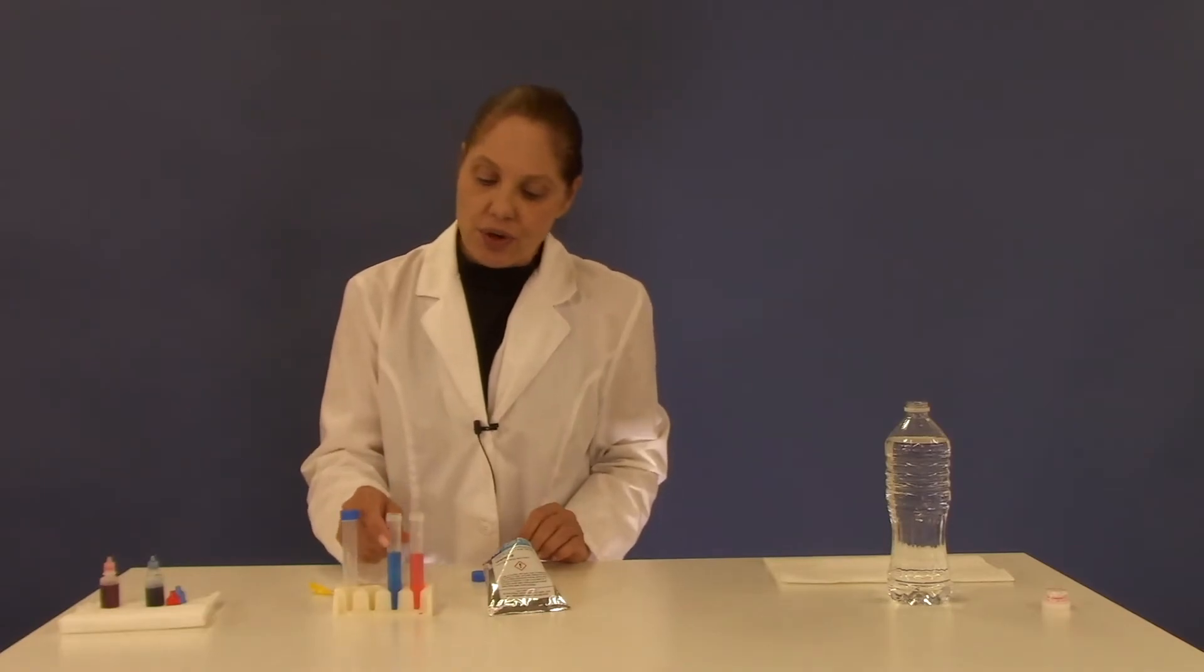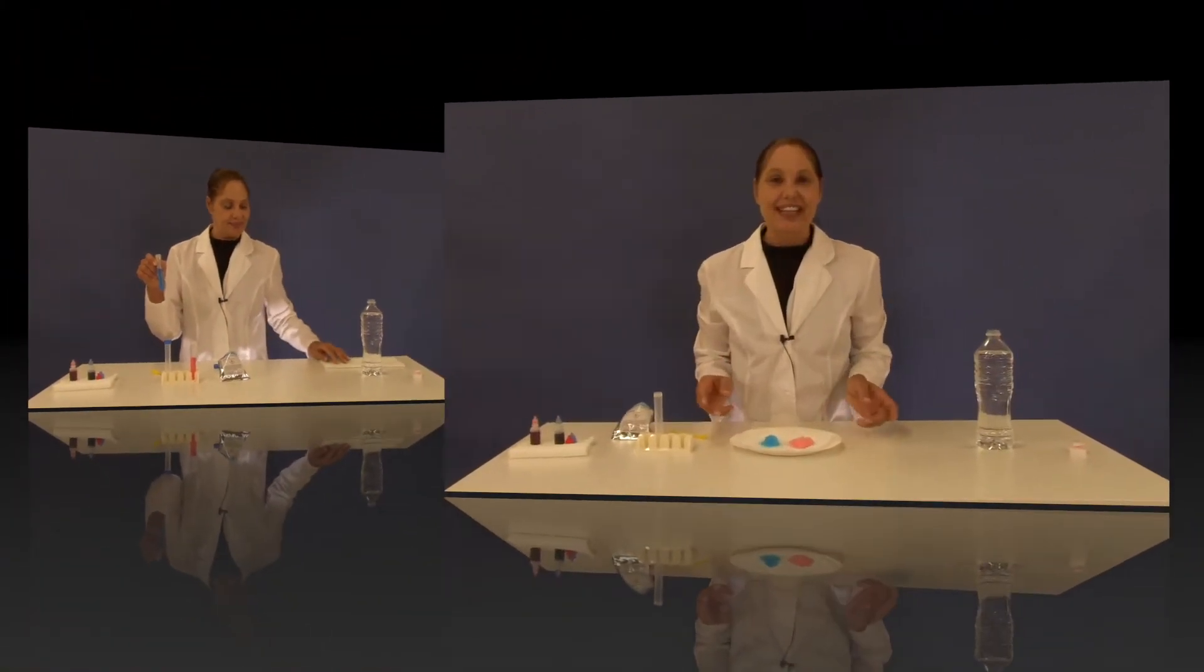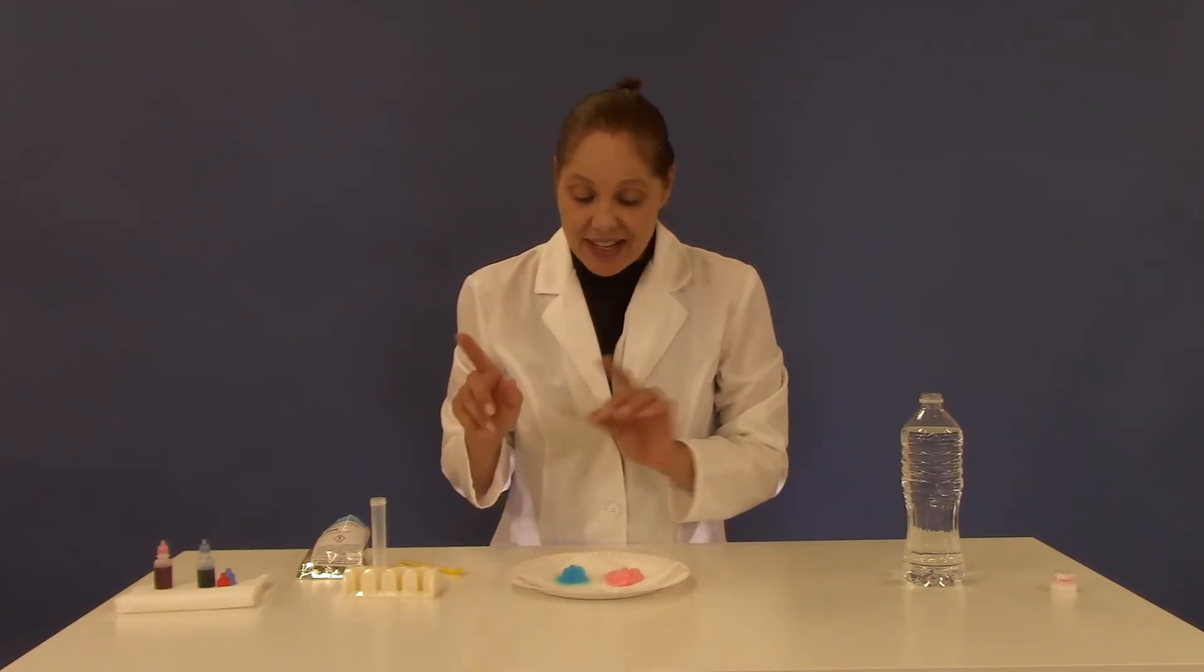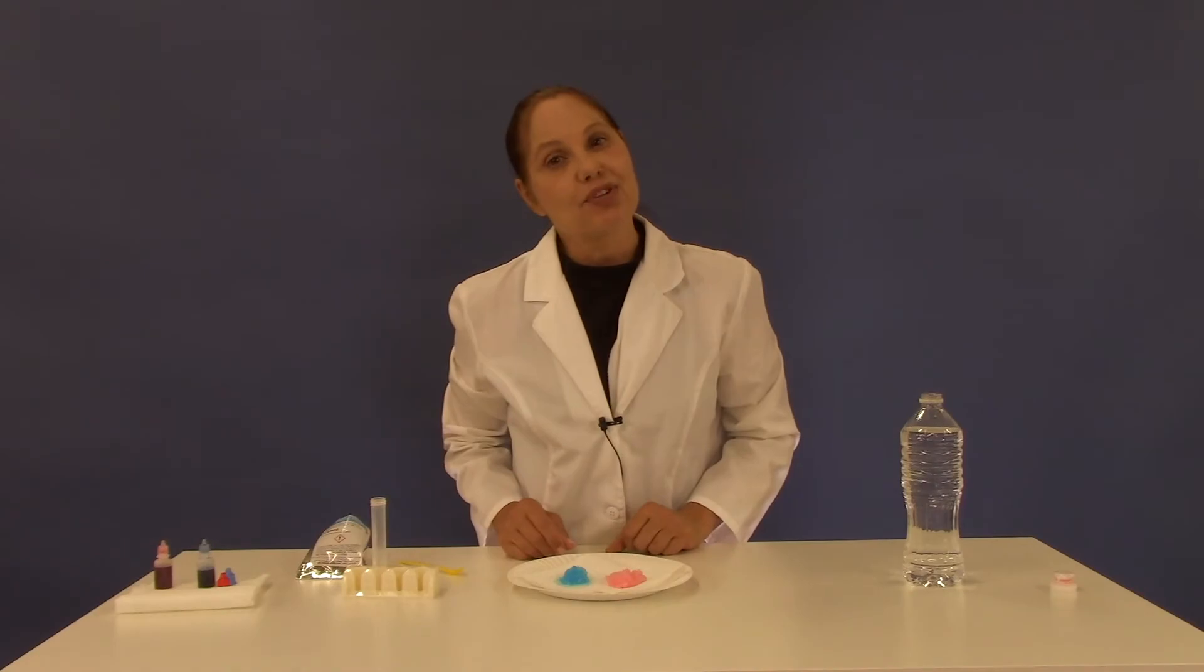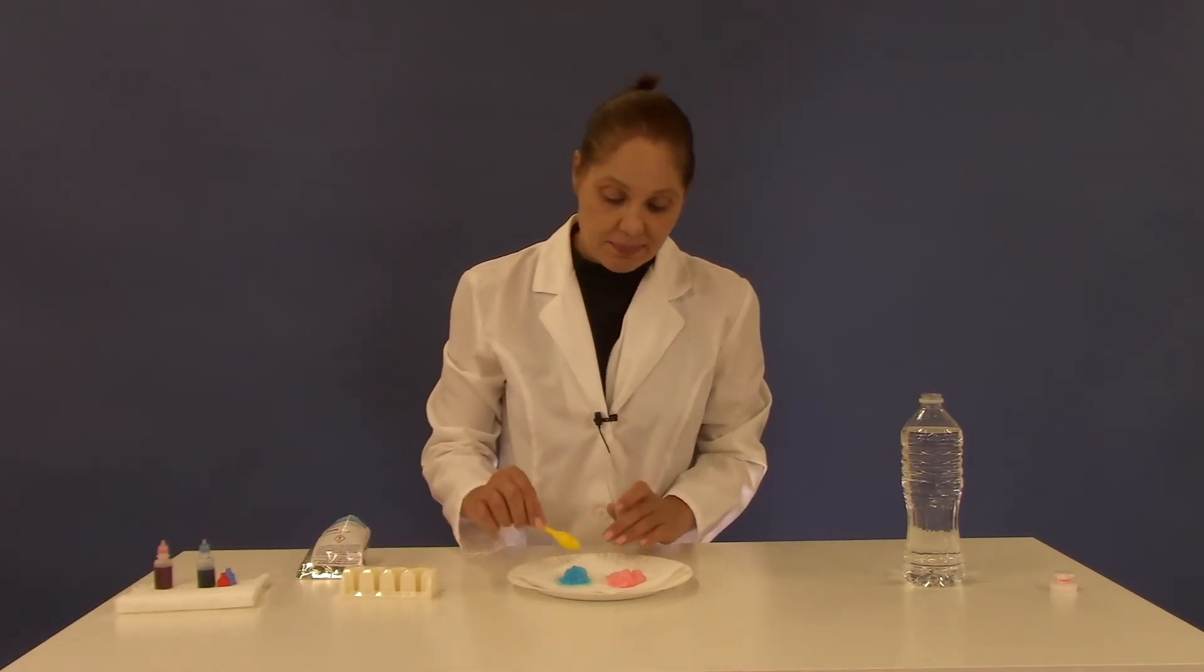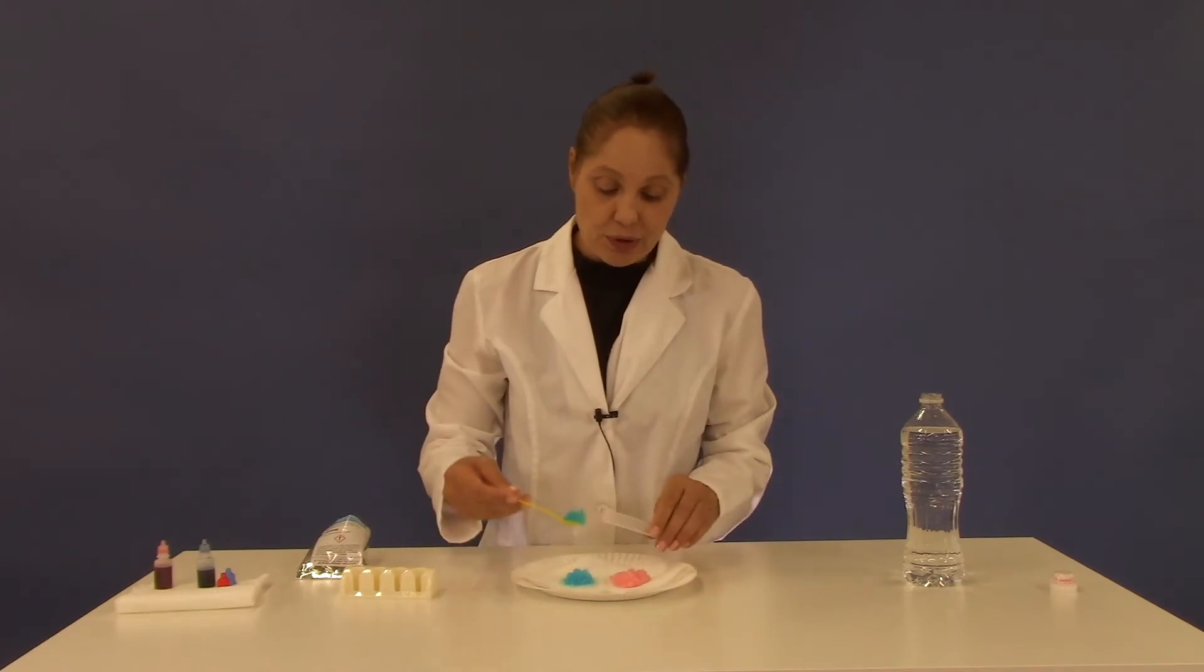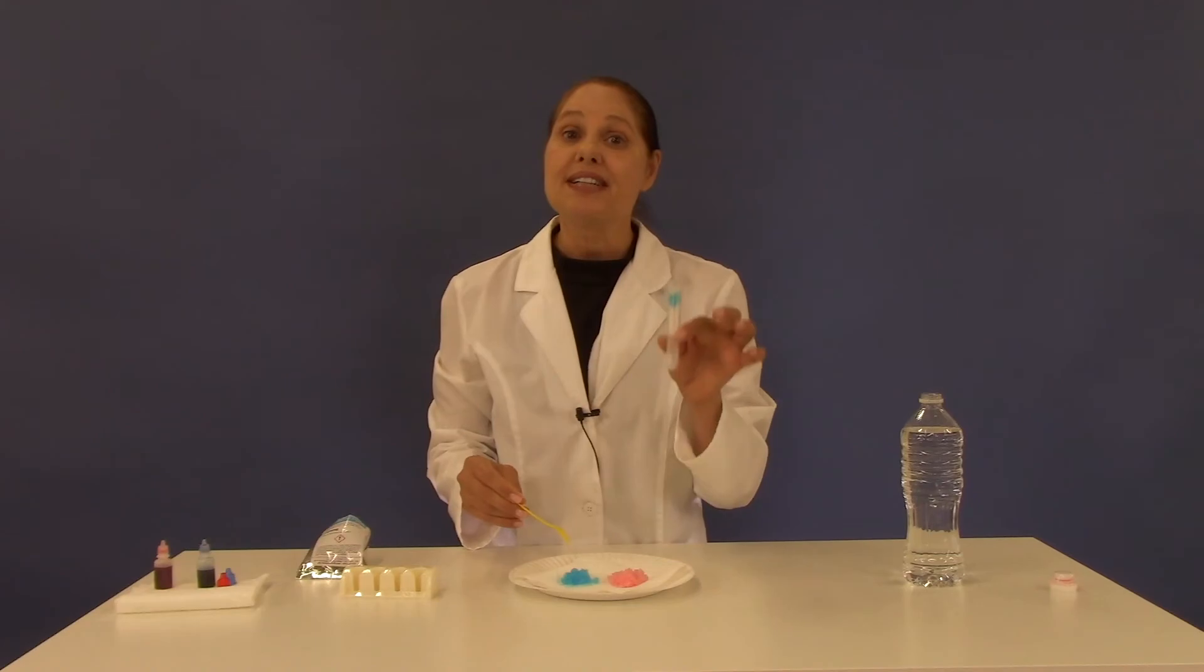Now you're going to let them sit for a little while. You'll notice that they're going to start to gel. As you can see, I have emptied out my test tubes onto my paper towel already and let them dry overnight. Now I'm going to layer them, alternating layers of blue and red, into test tube number three.